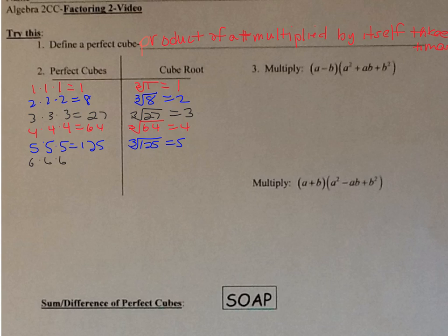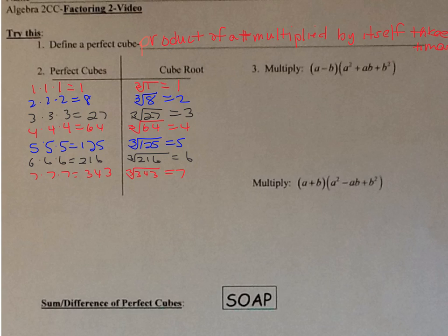6 times 6 times 6 is 216, so the cube root of 216 is 6. 7 times 7 times 7 is 343, so the cube root of 343 is 7. We can keep going, obviously.